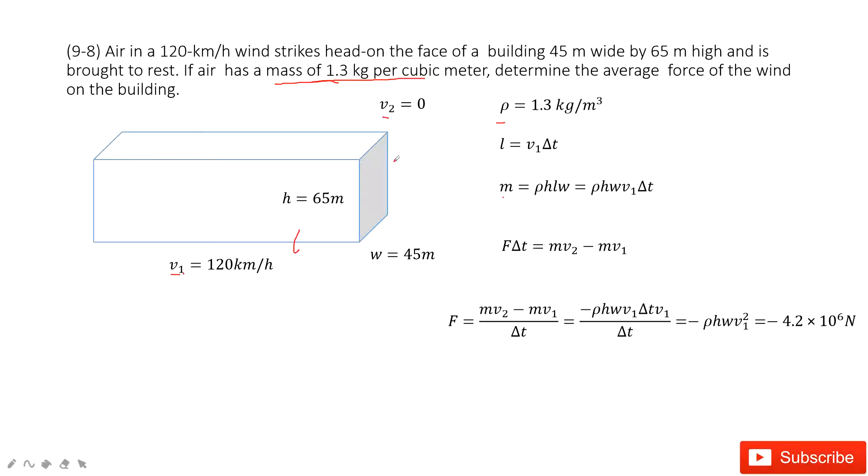So now we can find the mass for this box of air. Its density times the volume. And then we include all the known quantities. Density is given, h is given, w is given. L we can replace by V1 times Δt. So now, mass is given.